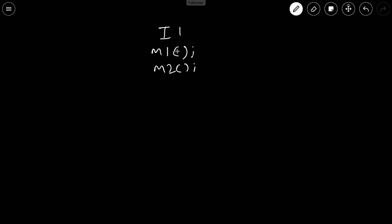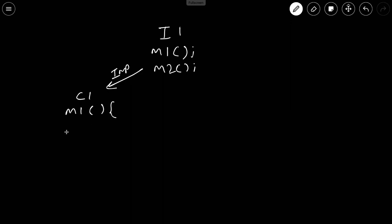This is the interface. Now let's say there is a class c1 that wants to implement this interface. The deal is that all the methods in this interface must be implemented by that class. So when we implement it, we have method m1 — we define its parameters and its body — and we also have to include the second method, m2.